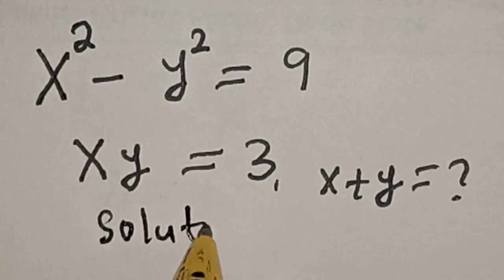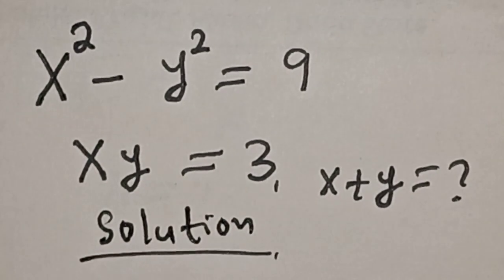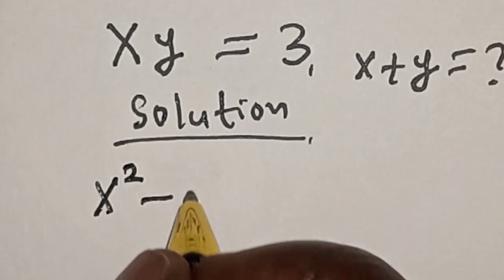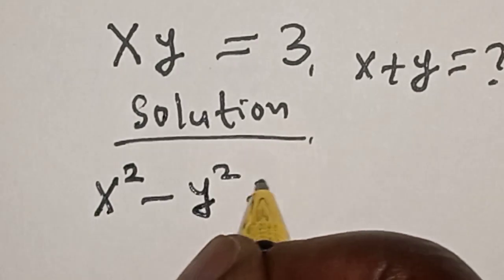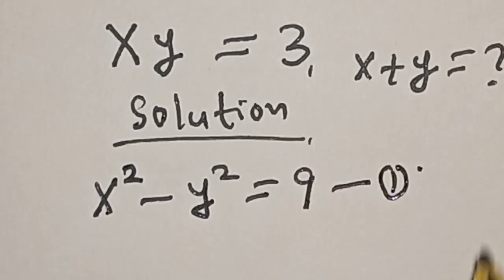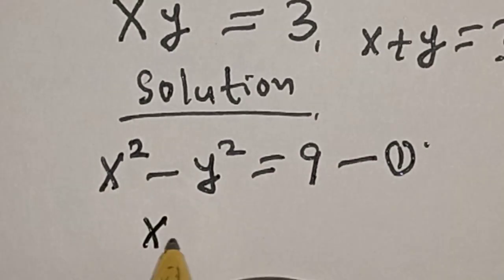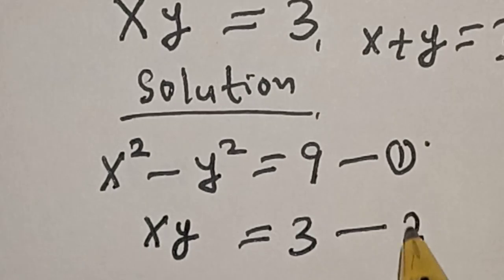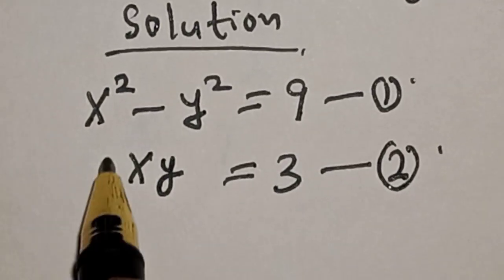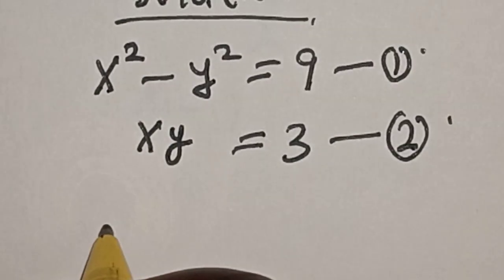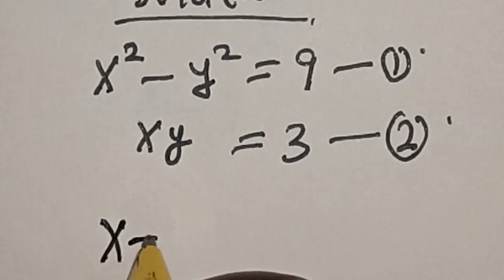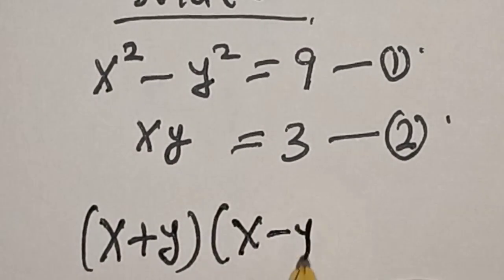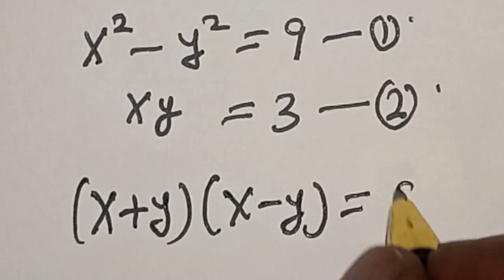Solution. We have the given equations: x squared minus y squared is equal to 9 — let's call this equation 1. And xy is equal to 3 — let's call this equation 2. From equation 1, this is a difference of two squares, that is: x plus y multiplied by x minus y is equal to 9.